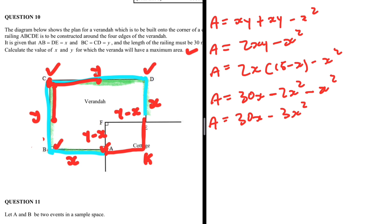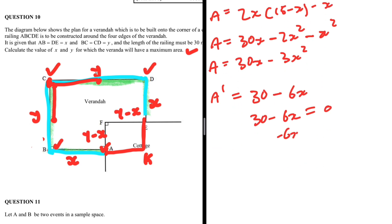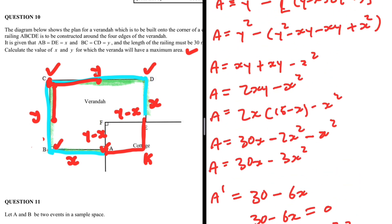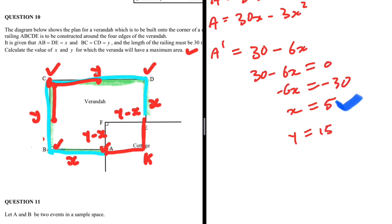To find the maximum, we differentiate: A prime equals 30 minus 6x, and set it equal to zero. Solving: minus 6x equals minus 30, so x equals 5. Since y equals 15 minus x, y equals 15 minus 5, which gives y equals 10. Therefore, for maximum area, x equals 5 and y equals 10.